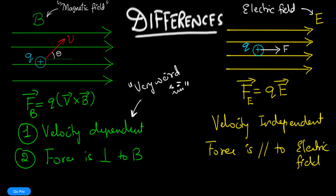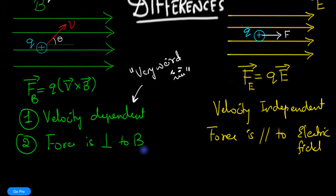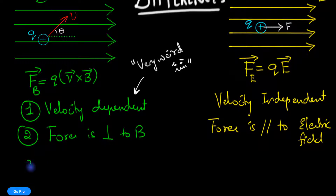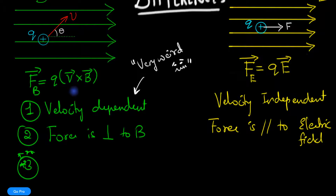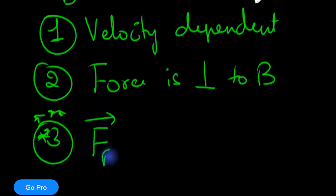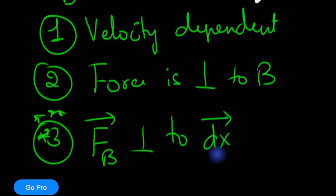Now comes a major — and very subtle — difference: difference number three. Not only is the force perpendicular to the magnetic field, but it's also perpendicular to the velocity, as you can see from the cross product. The big deal is that if the force is perpendicular to the velocity vector, it is also perpendicular to the displacement dx, since instantaneous velocity dx/dt is in the same direction as dx.